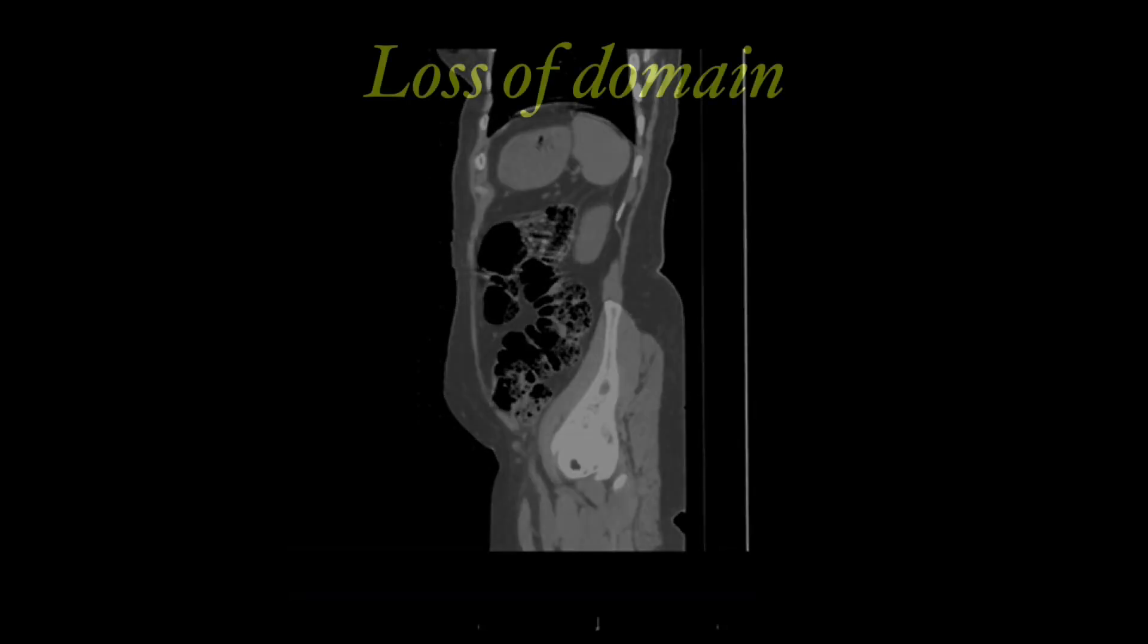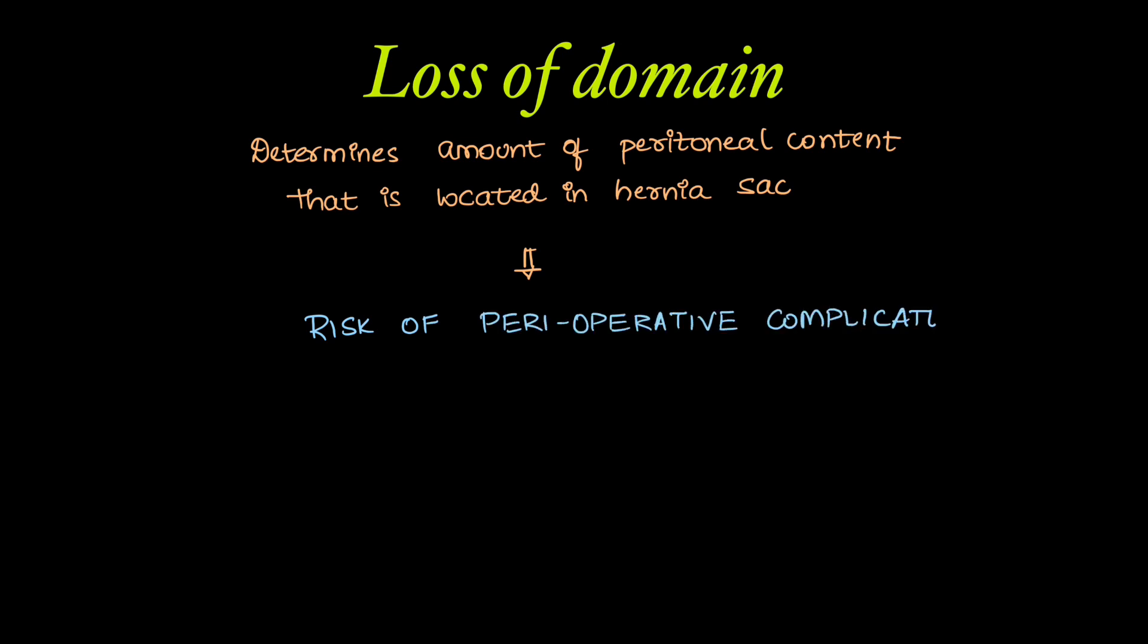What does loss of domain or the ratio of loss of domain mean? It determines the amount of peritoneal contents, that is bowel, omentum, etc., that is located in the hernia sac. This gives a risk of perioperative assessment for complications.